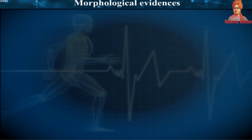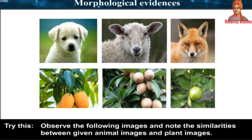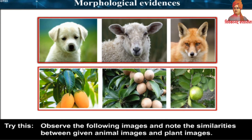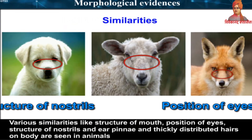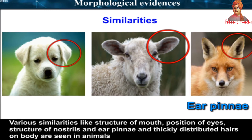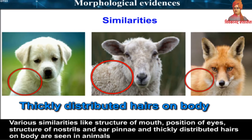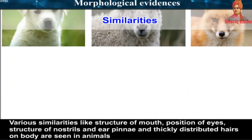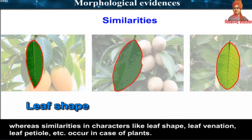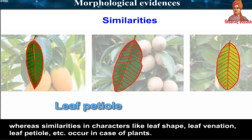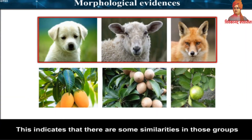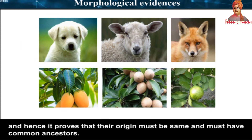Morphological Evidences. Observe the following images and note the similarities between animal and plant images. Various similarities like structure of mouth, position of eyes, structure of nostrils, ear pinna, and thickly distributed hairs on body are seen in animals. Similarities in characters like leaf shape, leaf venation, and leaf petiole occur in plants. This indicates similarities in those groups and proves that their origin must be the same, and they must have common ancestors.